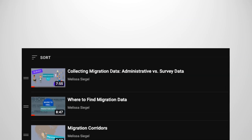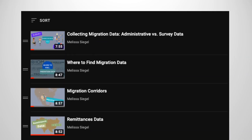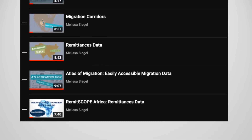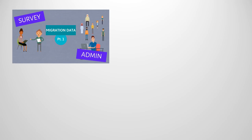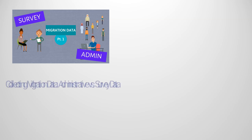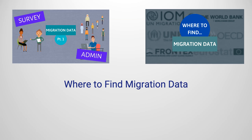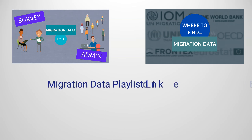If you're new to the channel, I encourage you to look at some of the earlier explainer videos about migration data, all of which will be linked in the description. We've previously looked at the different types of data available such as administrative and survey data in the Collecting Migration Data video, and then where to find data on migrant stocks and remittance flows in the video titled Where to Find Migration Data. Further videos on remittance data and the different ways migrants are classified for statistical purposes can be found linked in the description as well.